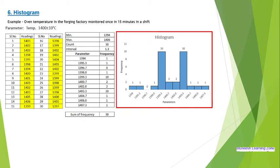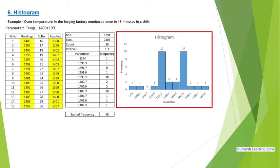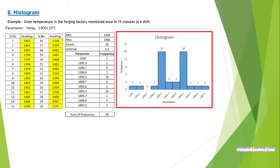Coming back to the example — this is a forging factory. In a shift, we observe the temperature every 15 minutes. The temperature in the forging factory is a CTP — Critical to Process parameter. The outcome is Critical to Quality. We observe the actual temperature readings. If we look at 30 readings, we can generate histograms.